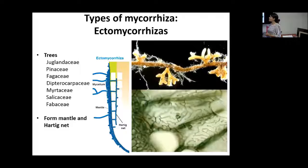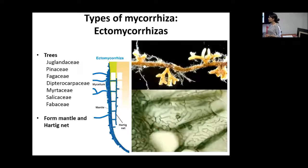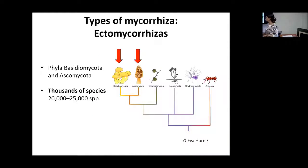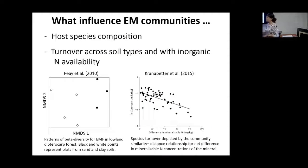The ectomycorrhizal is the other type. They are associated mostly with trees, and not a lot of species have this type of association, but they are mostly in certain tree families. They form two types of organs — the mantle and the Hartig net — and they grow only around the cells, not inside. That's what makes them ectomycorrhizal. They are mostly in the Basidiomycota and Ascomycota phyla, and there are thousands of fungal species that form this type of association.